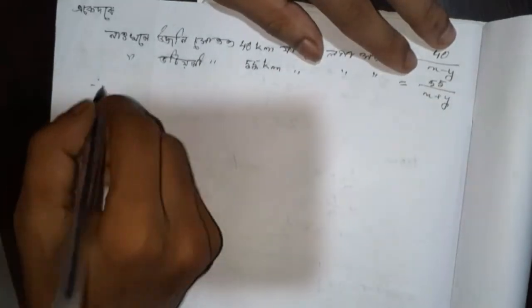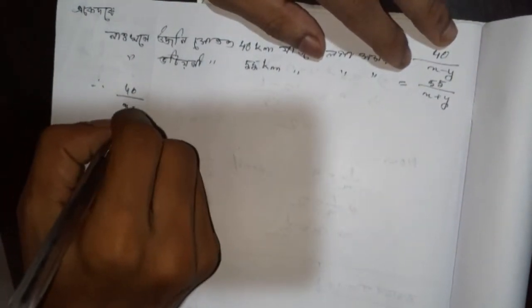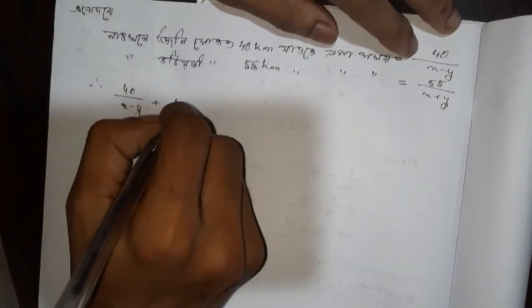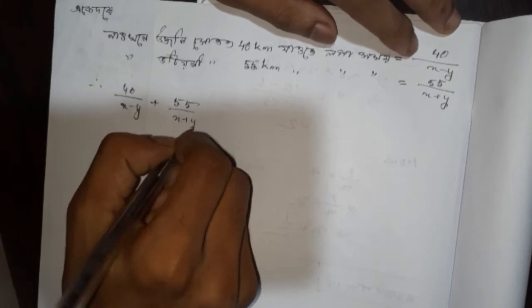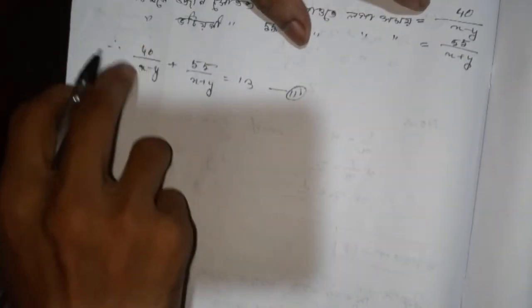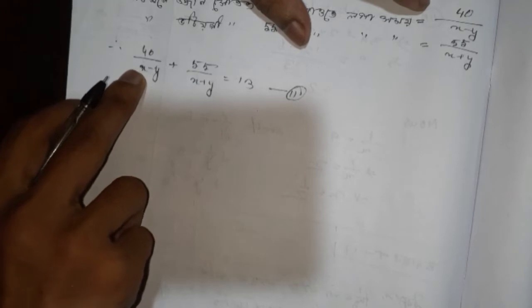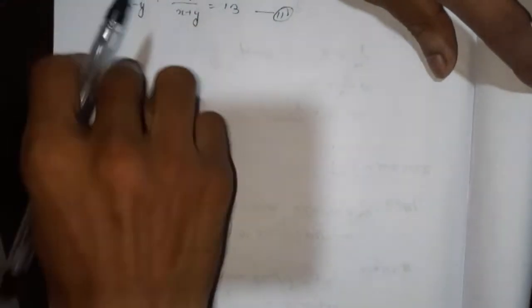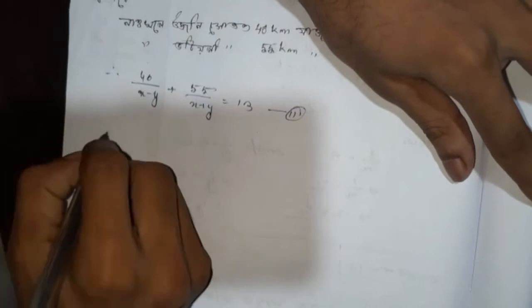40 plus x minus y, plus 55 by x plus y, equal 30. This is two numbers. This is the first step of the step. This step is x minus y and the second step is x plus y. So, the step of x minus y and the second step is x plus y.